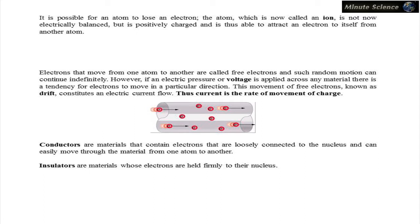It is possible for an atom to lose an electron. The atom, which is now called an ion, is not now electrically balanced but is positively charged and is thus able to attract an electron to itself from another atom.